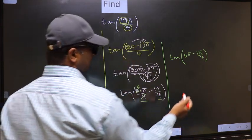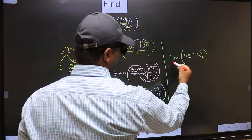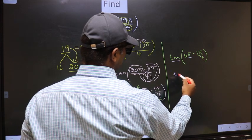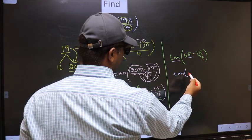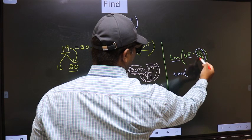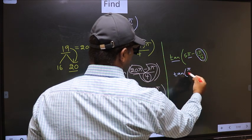Next, here we have pi. So tan is not going to change. It will remain tan. And inside, we get this angle, pi by 4.